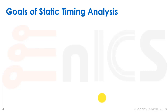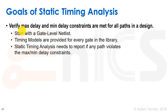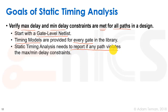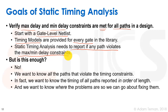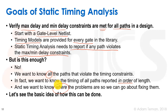The goals of our static timing analysis algorithm are to verify max delay and min delay constraints for all paths in the design. We start with a gate-level netlist and timing models provided for every gate in the library — without timing models we can't run STA. Our goal is to report every path that violates the max and min delay constraints, ordered by how badly they violate them, and also where the violations occur. It's amazing that we can do all of this in a pretty simple algorithm that runs quickly even for millions of paths.